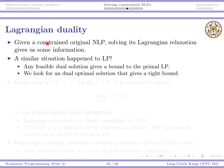So given a constrained original nonlinear program, solving its Lagrangian relaxation will give us some information or a bound. This is actually familiar to you, right? For LP, we have faced exactly the same situation. Given a primal solution, a primal LP, any feasible dual solution gives an upper bound or lower bound.